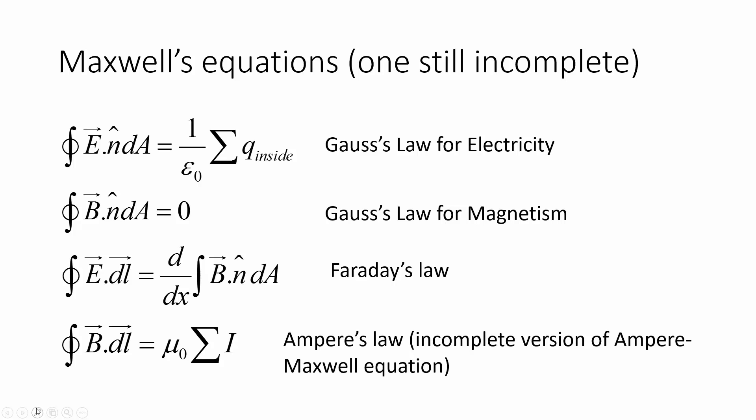So we're nearly there in terms of the fundamental equations of electricity and magnetism. We've got three of them: Gauss's law for electricity, Gauss's law for magnetism, and Faraday's law complete, and there's just a little bit to go on Ampere's law. It turns out that Ampere's law is still a little bit incomplete, and that's what we're going to talk about today.